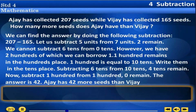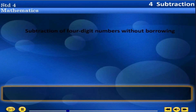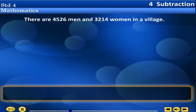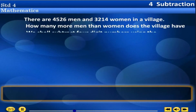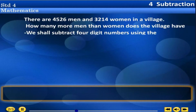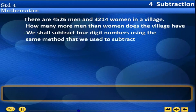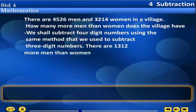Ajay has 42 more seeds than Vijay. Subtraction of 4-digit numbers without borrowing. There are 4526 men and 3214 women in a village. How many more men than women does the village have? 4526 minus 3214. The answer is 1312. We subtract 4-digit numbers using the same method used for 3-digit numbers. There are 1312 more men than women.